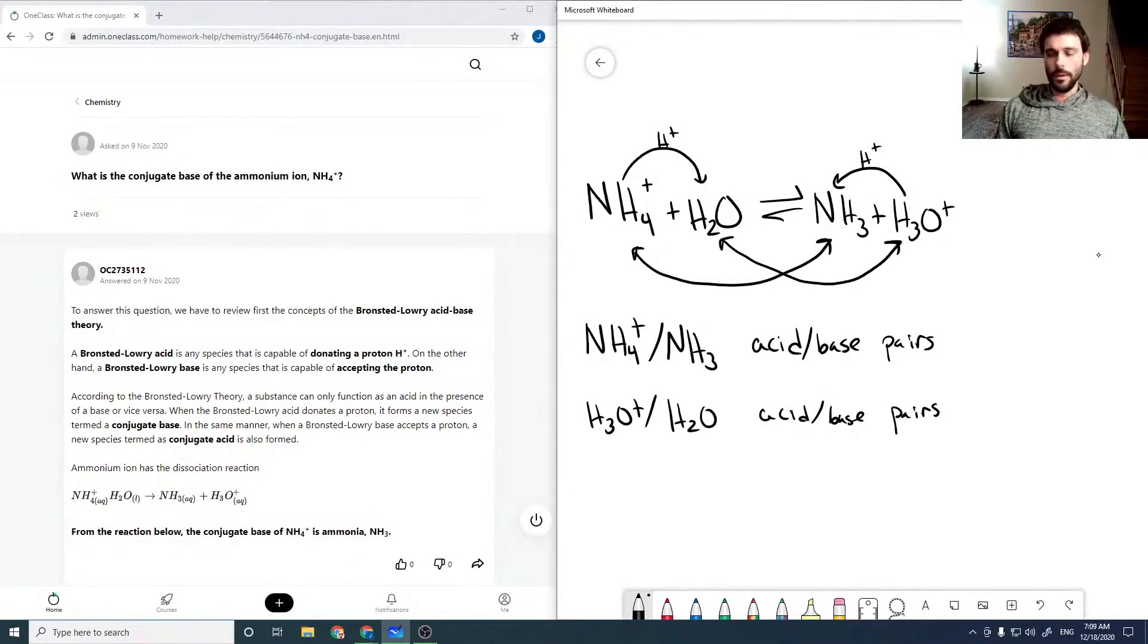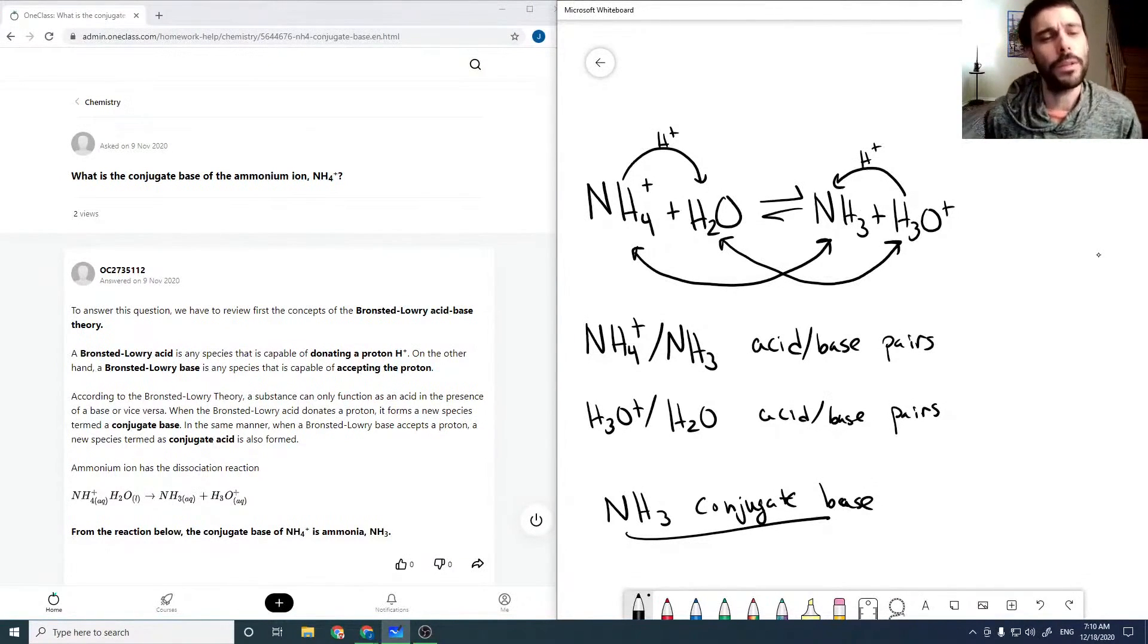We say that ammonia, or NH3, is the conjugate base of NH4+. You can see that we just remove H+ from the acid to get our conjugate base.